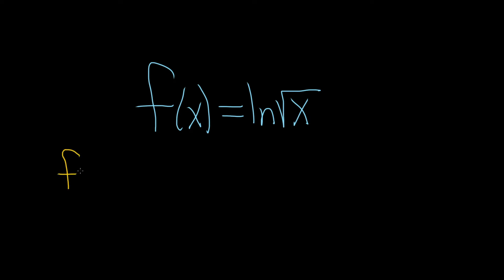So we have f of x, so we're going to rewrite it. And this is equal to ln. And whenever there's a square root, you can write it as x to the 1 half.